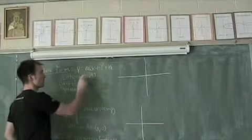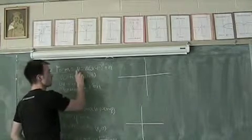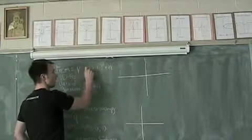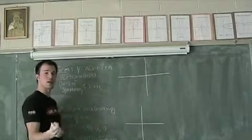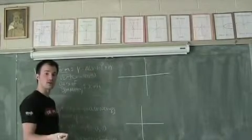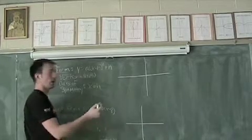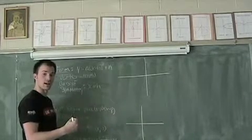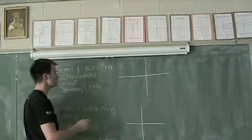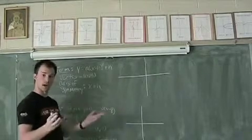Vertex form follows the basic formula of Y equals A, and that's the same A that we were talking about with the standard. So if it's positive or negative, whether it opens up or down, and if it's greater than or less than 1 in absolute value, whether it's wider or skinnier.